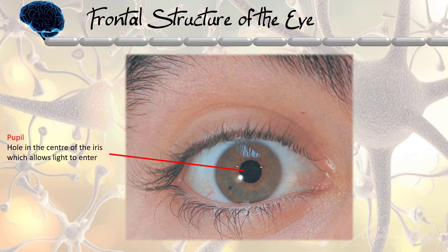It is not a black-colored spot but instead it is a hole. Because all the light is absorbed in the structure behind the eyes — which you will learn in the next video — no light is reflected back, hence it looks black.